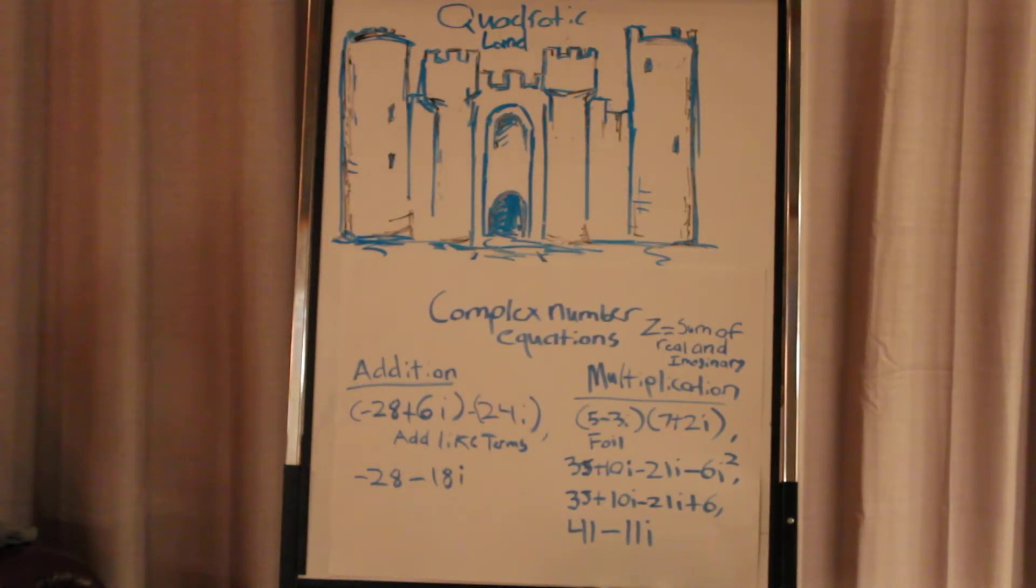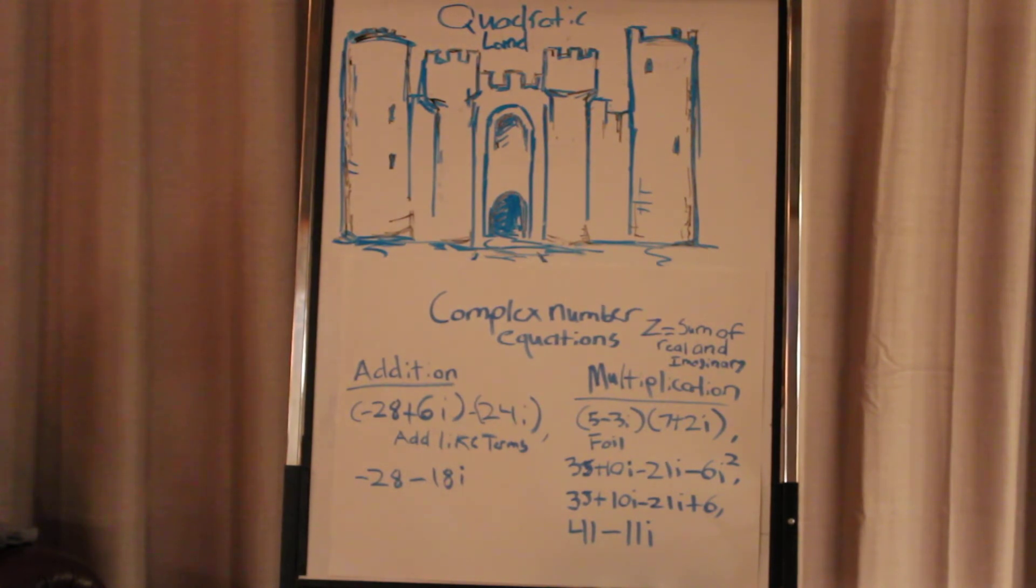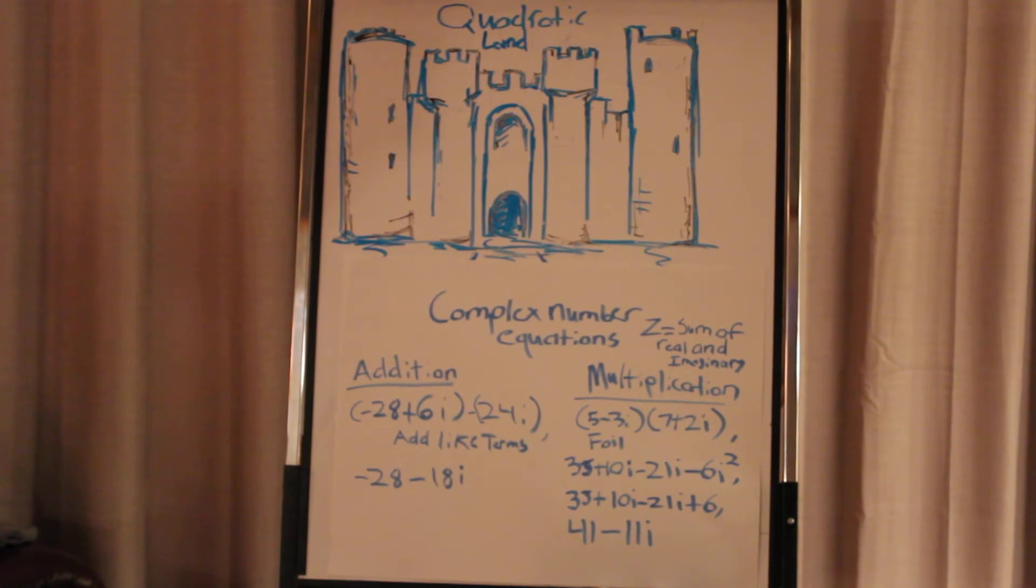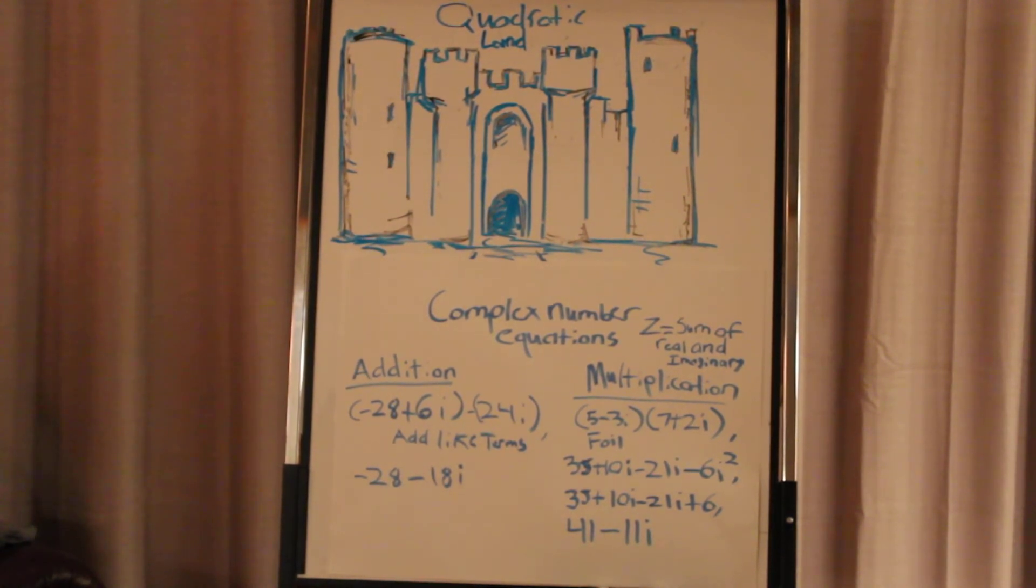Alright, and so, now we're going to move on to complex number equations. But first, we have to talk about the variable z. And z is basically the sum of real and imaginary numbers combined, or a complex number equation. And so, if you ever see it, just know that z is referring to when those two are intertangled, when they come together. And so, now we'll be moving on to simple operations and arithmetic when it comes to complex numbers and equations.